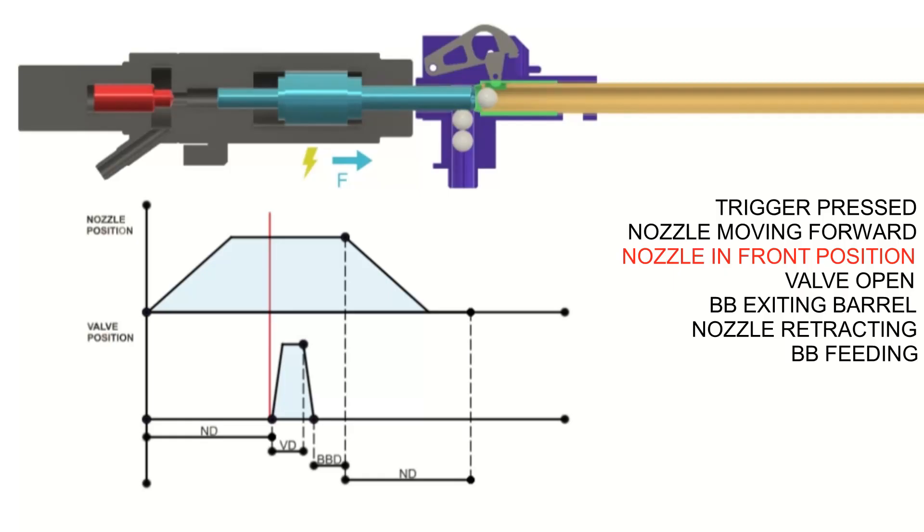After nozzle dwell timer expires, valve coil is energized. Piston starts to open and at this point we can already see that BB starts to leave the barrel.